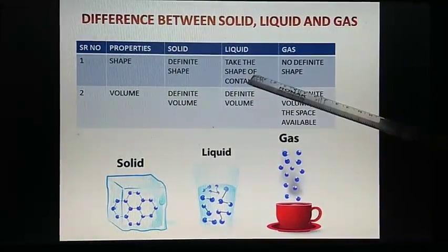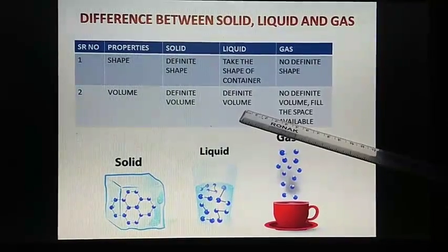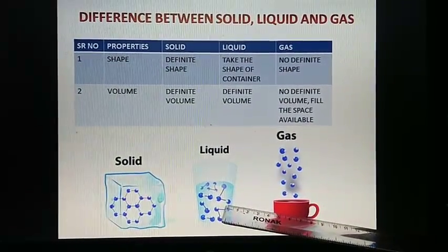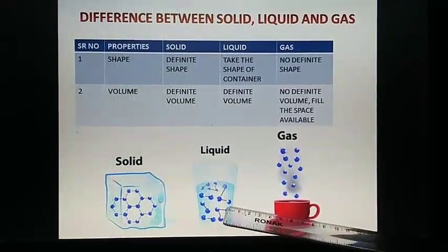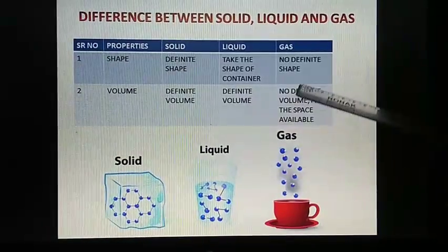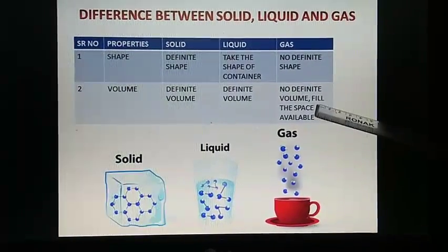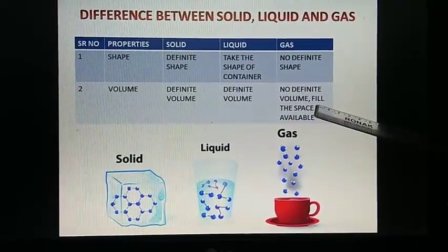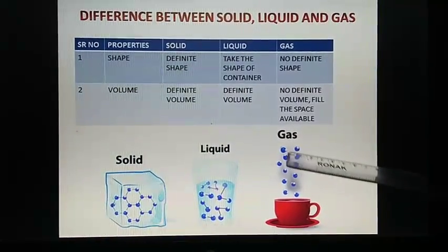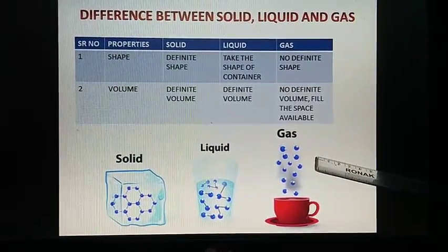Liquid takes the shape of a container and has a definite volume. Here, the liquid has taken the shape of a glass and also has a definite volume. Gas has no definite shape, no definite volume, and fills whatever available space it gets.